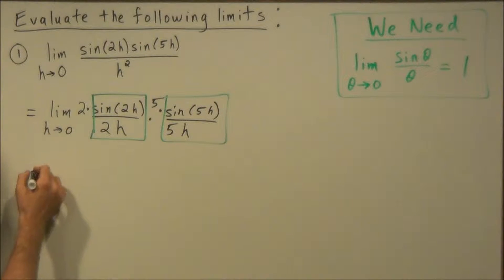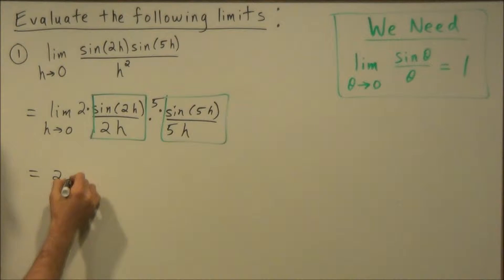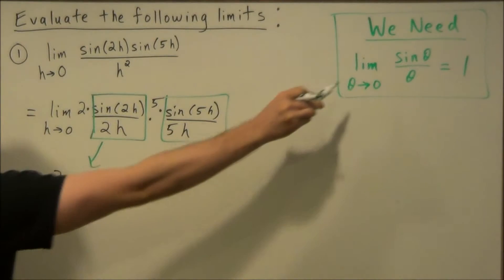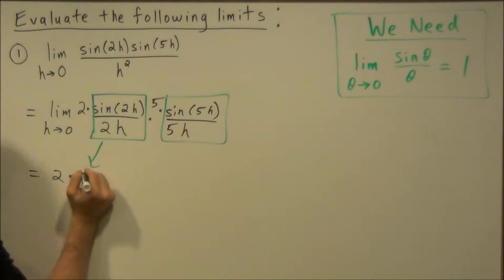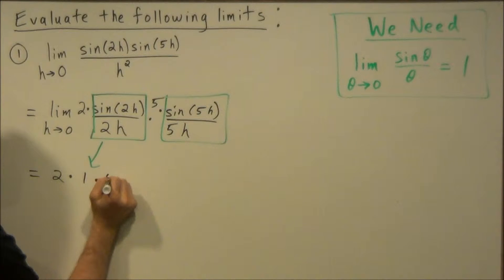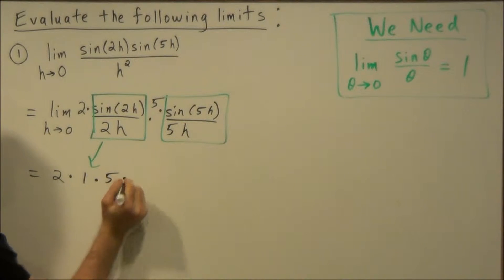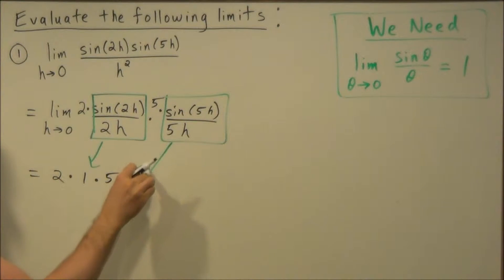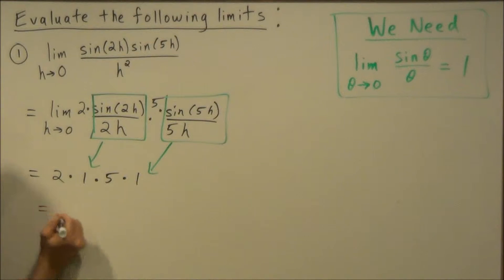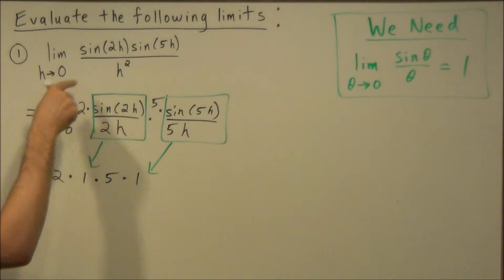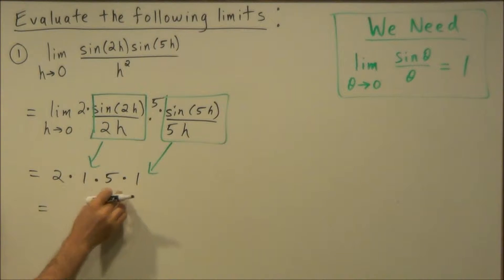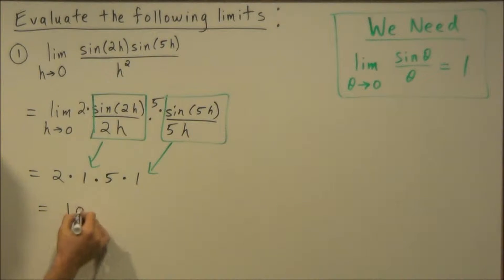When we simplify, this is two times one — since the green part goes to one by our formula — times five times one. So our answer to the first problem, the limit as h goes to zero, equals two times one times five times one, which is equal to ten.